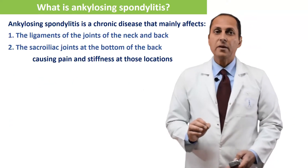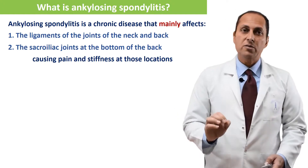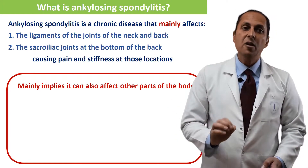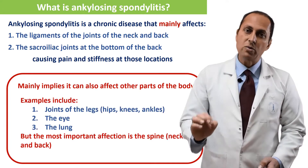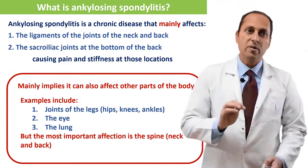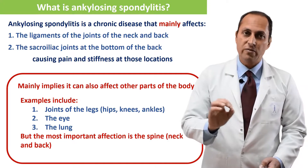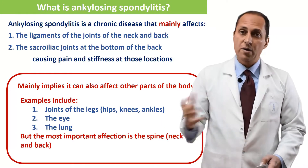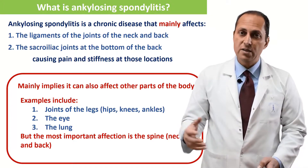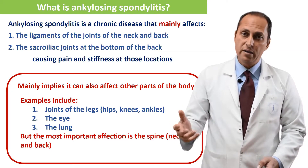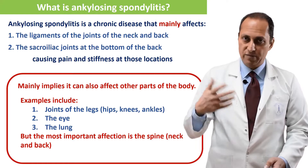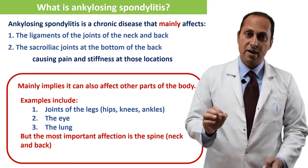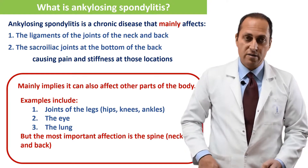Number two: ankylosing spondylitis is a chronic disease that mainly affects. What does 'mainly' mean? Mainly means that it can also affect other parts of the body, but the main affection is in the ligaments of the joints of the neck and back and the sacroiliac joints. The other parts can be other joints like the hips, the knees, the ankles; it can affect the eye causing iritis — inflammation of the eye — and it can affect the lung.